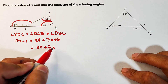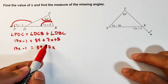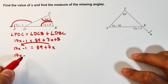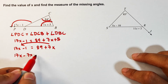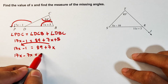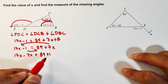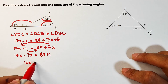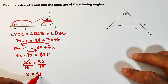Combining like terms: 17x minus 1 equals 7x plus 89. Transposing 7x to the other side: 17x minus 7x equals 89 plus 1. So 10x equals 90. Dividing both sides by 10, x equals 9.